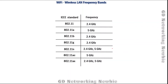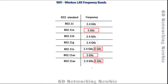Different IEEE standards use different frequency bands. The standards 802.11, 802.11b, and 802.11g use the 2.4 gigahertz band. Some standards use the 5 gigahertz band, and 802.11n uses both 2.4 gigahertz and 5 gigahertz.